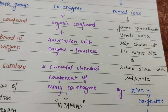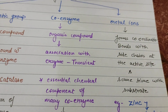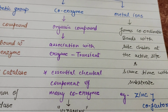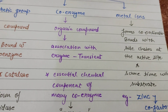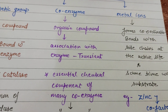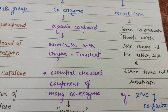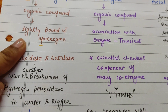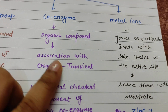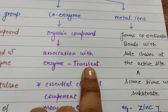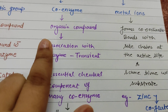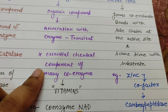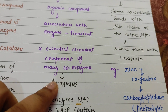The association of coenzymes with enzymes is transient — meaning loosely bound. The essential chemical component of many coenzymes are vitamins. So the vitamin is essentially a chemical component of co-enzymes, and almost all co-enzymes contain vitamins.